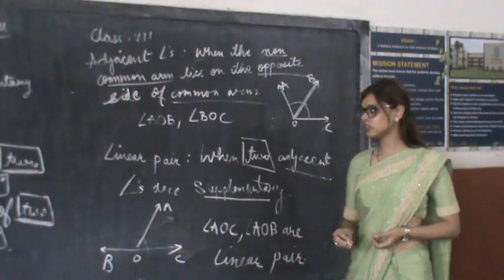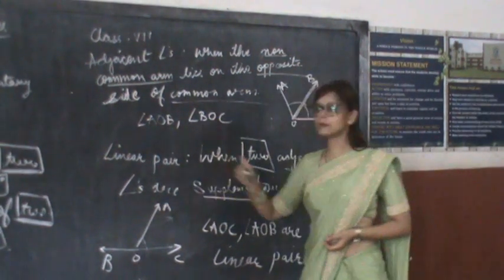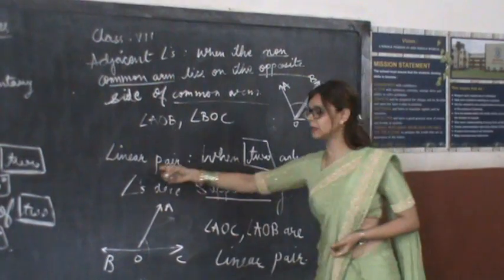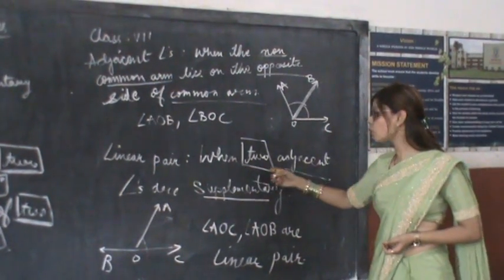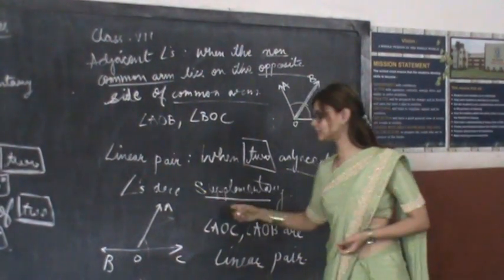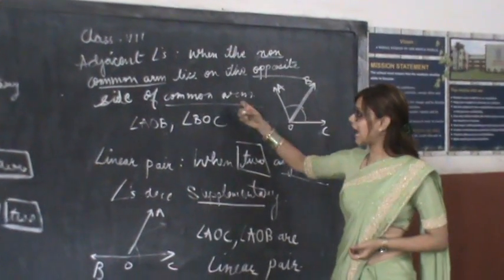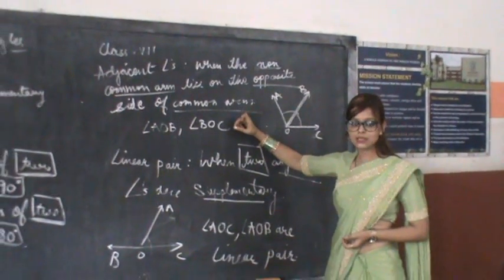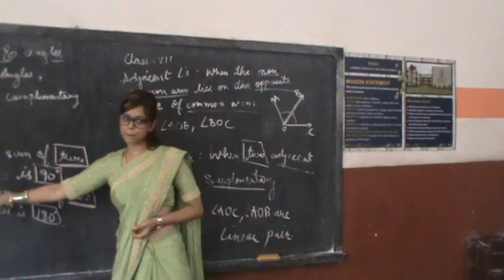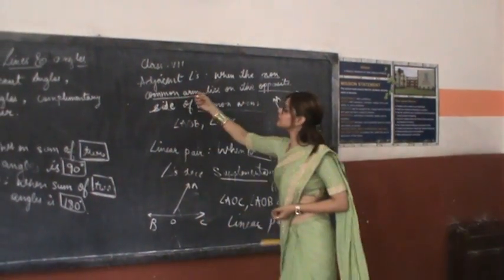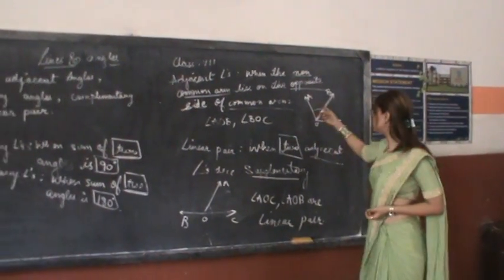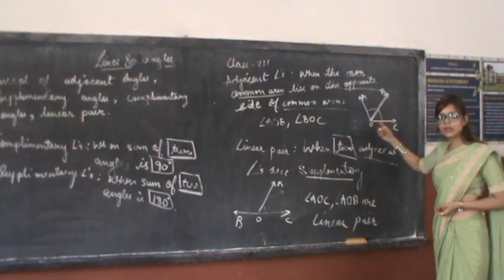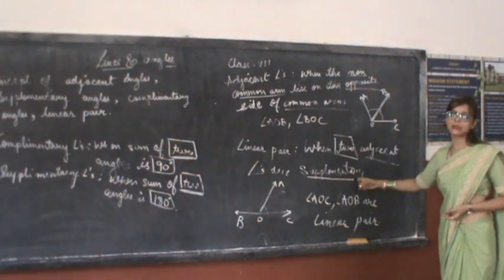Now the last concept in the first exercise is about linear pair. That is when two adjacent angles are supplementary. The angles have to be adjacent as well as supplementary. When the sum of two adjacent angles is 180 degrees,